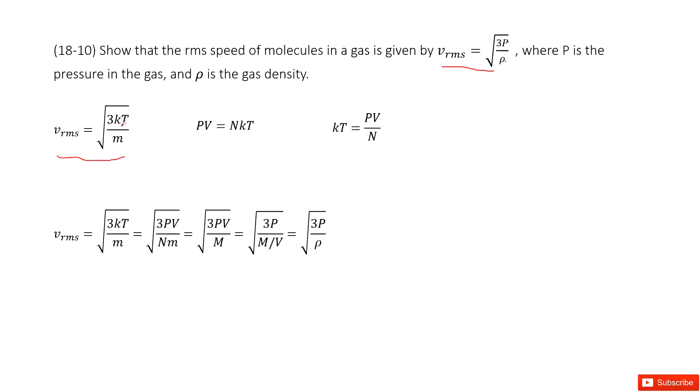RMS speed, we can say, squared 3kT divided by mass. And you can say only 3 is the same, so kT and mass is not the same, right? So can we convert the kT with P or something?